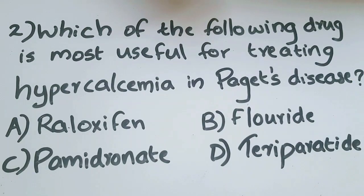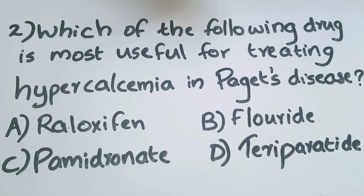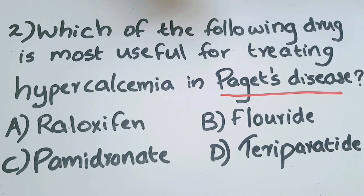Second question: which of the following drugs is most useful for treating hypercalcemia in Paget's disease? Option A: raloxifene, option B: fluoride, option C: pamidronate, and option D: teriparatide. Paget's disease is characterized by excessive bone resorption and poorly organized bone formation.